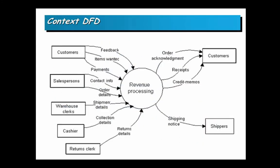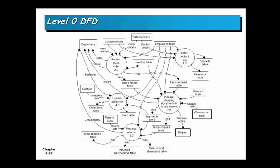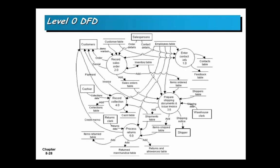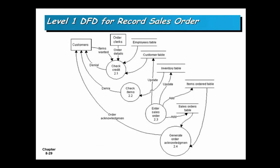There's a context DFD, a level 0 DFD, and a process DFD. Maybe for one of those processes — record sales order 2.0. If you want more detail, here's a level 1 DFD. This is what you do to record the sales order: you check for credit, check whether the item is in stock, enter the order, and then acknowledge it.